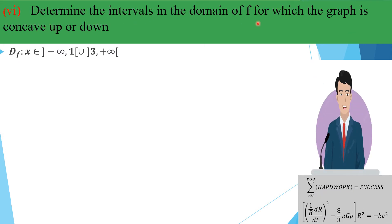Determine the intervals of concavity. The domain has two intervals: x < 1 and x > 3. A graph is concave up on an interval if f''(x) > 0 there, and concave down if f''(x) < 0. We evaluate f'' at a test point in each interval.